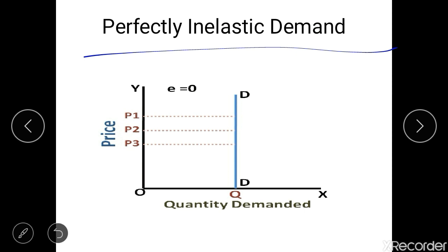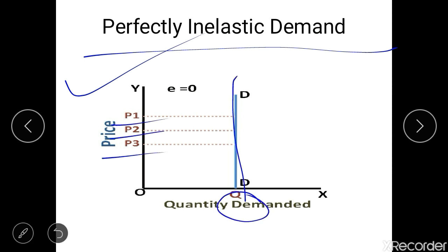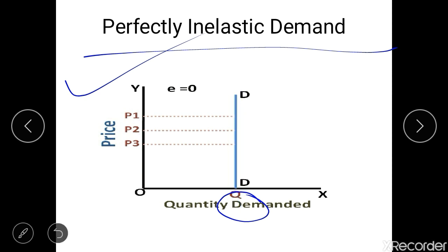This kind of demand is called perfectly inelastic demand, where demand does not respond at all to the change in price — it remains the same whatever the price. As you can see in this curve, the quantity demanded is the same at all prices. Even when the price decreased from P1 to P2 and P2 to P3, the demand always remained the same.